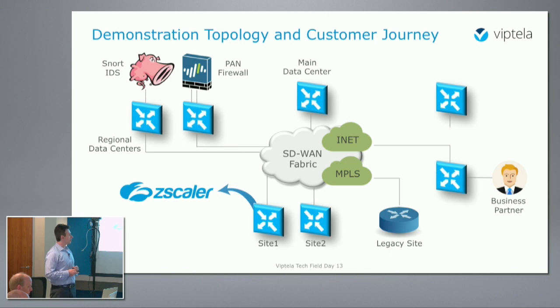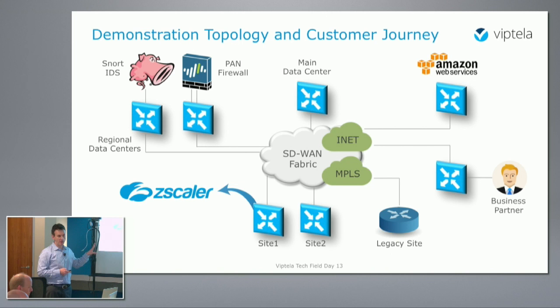Then we're going to talk about cloud — Amazon Web Services as an inherent part of the fabric. The same services I consume from the branch I can consume in AWS. I can insert a service hosted in AWS — I can put my Palo Alto firewall in AWS and insert it into the traffic path between sites. Completely transparent, topology agnostic, IP address agnostic. For us, AWS is just one more site that came up, and you get a full range of services.